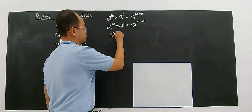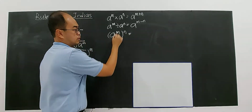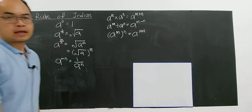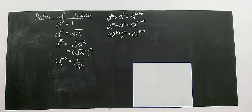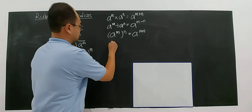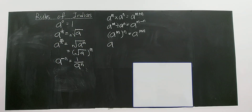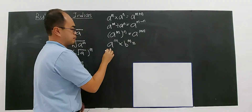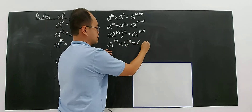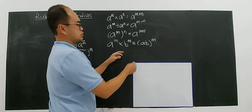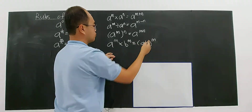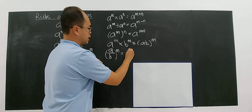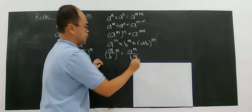Another rule: if you have A to the power of M, then to the power of N, you multiply the indices — you get A to the power of M times N. Also, if you have A to the power of M multiplied by B to the power of M — different base but same power — you can write it as AB to the power of M. And A over B to the power of M equals A to the power of M divided by B to the power of M.